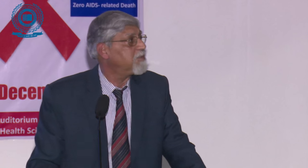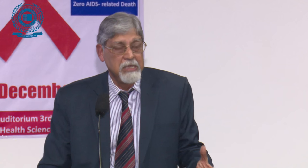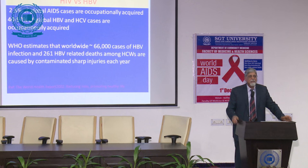The mode of transmission of hepatitis B is similar to HIV; therefore, care in controlling hepatitis B also addresses HIV transmission. When HIV/AIDS emerged, we already had extensive knowledge about hepatitis B. Consider: 2.5% of global AIDS cases are occupationally acquired, whereas 40 to 50% of global hepatitis B and C cases are occupationally acquired. WHO estimates that worldwide, about 66,000 cases of hepatitis B infection and 261 hepatitis B-related deaths among healthcare workers are caused by contaminated sharp injuries each year.